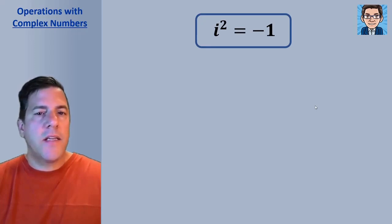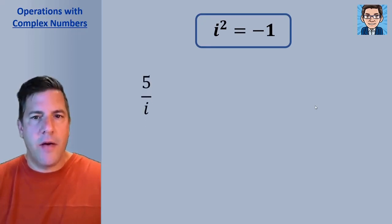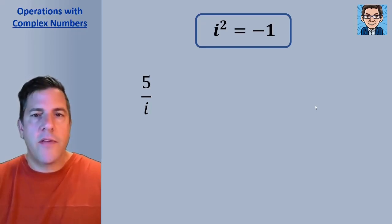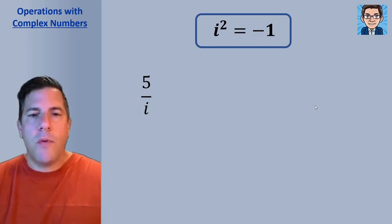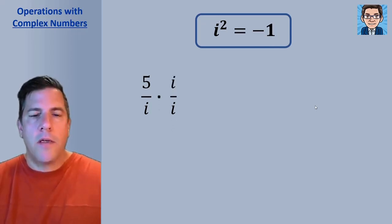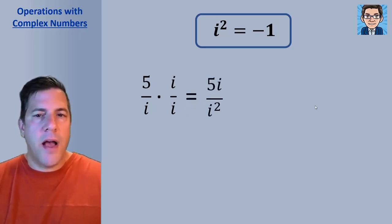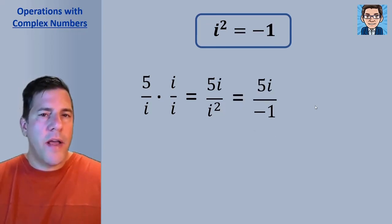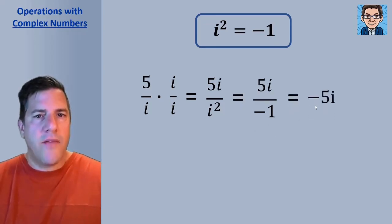If we have i in the denominator, since i is defined as a square root, we can't leave a square root in the denominator for a fully simplified expression. For 5 over i, we multiply both numerator and denominator by i — that's multiplying by 1. The numerator becomes 5i and the denominator becomes i squared. Replacing i squared with negative 1 gives 5i over negative 1, which is negative 5i.